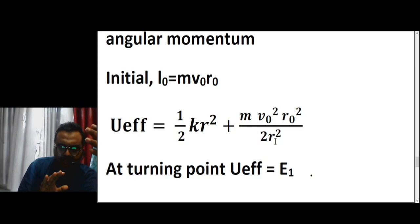At the turning points, the effective potential equals the total energy E₁, because the radial kinetic energy becomes zero. Setting the effective potential equal to E₁ and substituting the known values of v₀, r₀, k, and E₁ = 13 joules, we get a quadratic equation in r. A quadratic equation has two roots, and those two values of r correspond to the two radii of the ellipse — the minimum radius is 1.63 meters and the maximum radius is 2.45 meters.